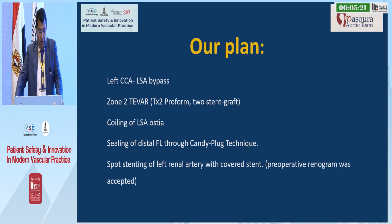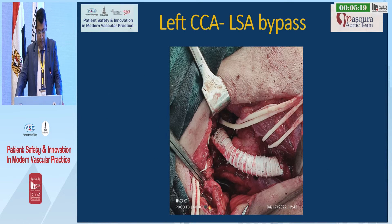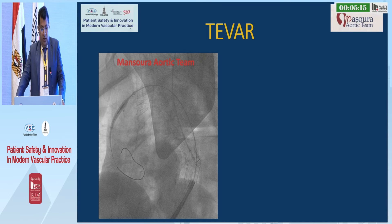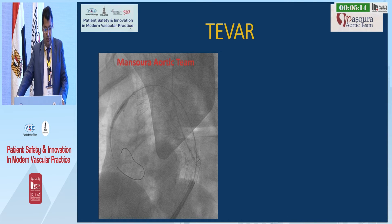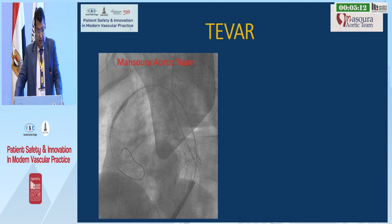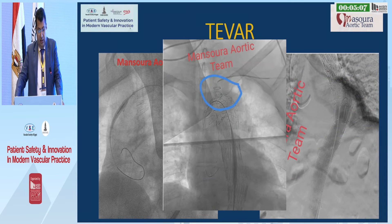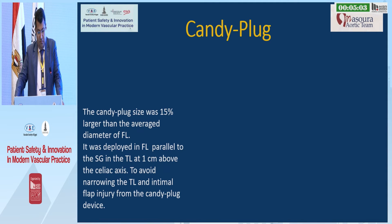Preoperative renogram was accepted. This is the left common carotid to left subclavian bypass. This is the first TX2 perform stent, then the second to the level of the celiac artery, and this is coiling of the ostium of the left subclavian artery.